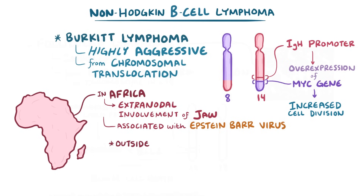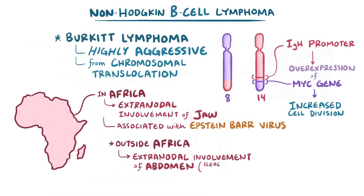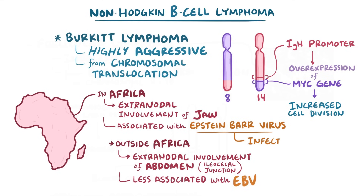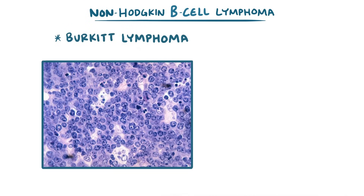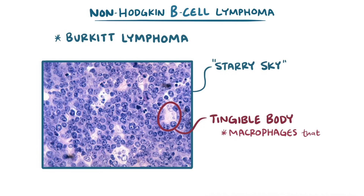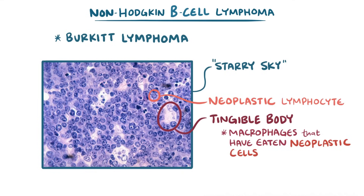In contrast, in individuals outside Africa, Burkitt lymphoma classically causes extranodal involvement of the abdomen, most often at the ileocecal junction, and is less frequently associated with Epstein-Barr virus infection. The Epstein-Barr virus infects lymphocytes and can incorporate its DNA into a host cell's DNA, though exactly how that leads to lymphoma is still unclear. Under the microscope, Burkitt lymphoma has a starry sky appearance, because macrophages called tingible body macrophages that have eaten dead neoplastic cells look like little stars scattered among dark neoplastic lymphocytes.